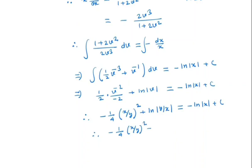So we have 1 by 4 x by y whole square, ln y minus ln x which is minus ln x plus c. So by canceling minus ln x, we have minus 1 by 4 x by y whole square plus ln y equals c is the general solution.